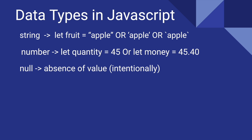Then we have null. Null is a data type which represents an absence of value done intentionally. We'll discuss more about it in upcoming videos — for now, just think of it as an intentional absence of value. Then we have undefined. If you declare a variable in your program but do not initialize it with any value, the type of that value is undefined. We'll see how undefined helps us in later videos.